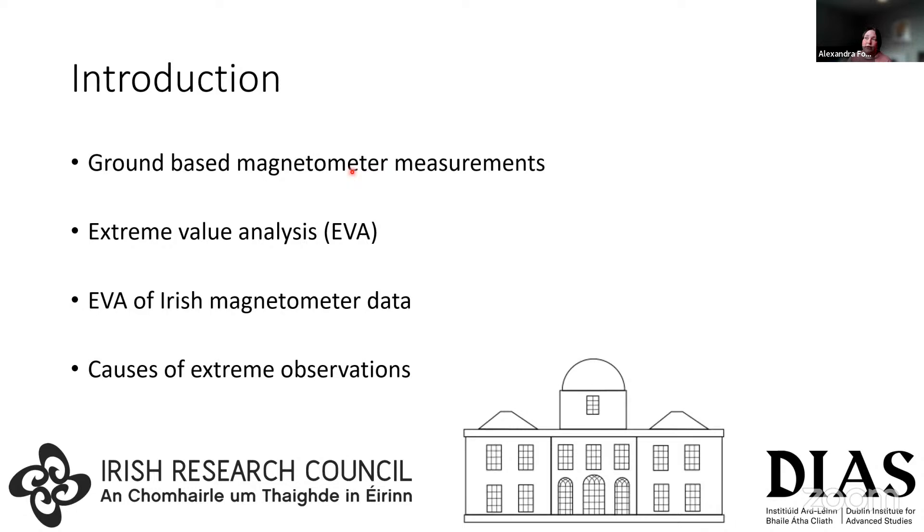So today I'm going to be talking about extreme space weather on Ireland. So I'm going to walk you through some of our ground-based magnetometer measurements that we have. And then I'll talk a little bit about the analysis technique I'm going to use, which is extreme value analysis. Then I'm going to show the extreme value analysis we've done on the Irish magnetometer data and talk about the causes of those extreme observations. So linking back to storms, substorms, and sudden commencements.